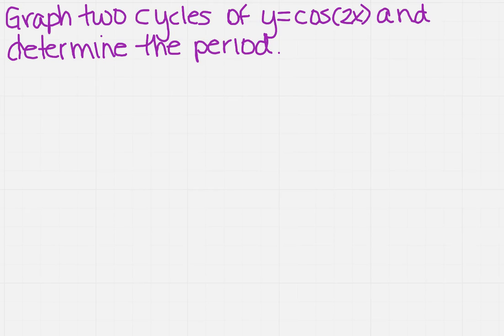We want to graph two cycles of y equals cosine of 2x and determine the period. We can determine the period right off the bat based on our base function. So what is the base function? The base function is just the cosine of x.